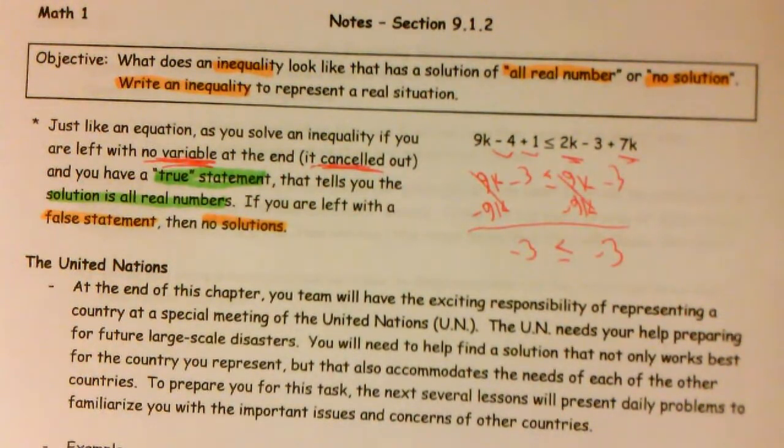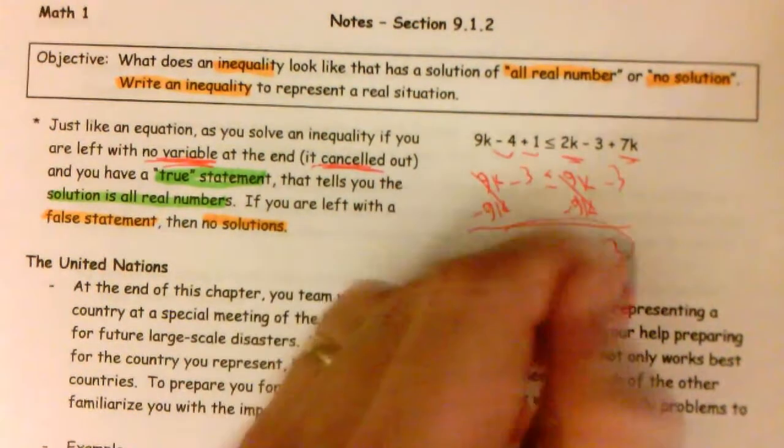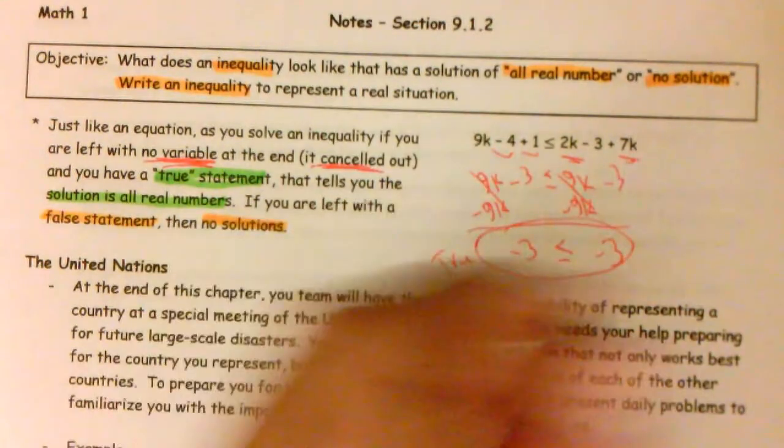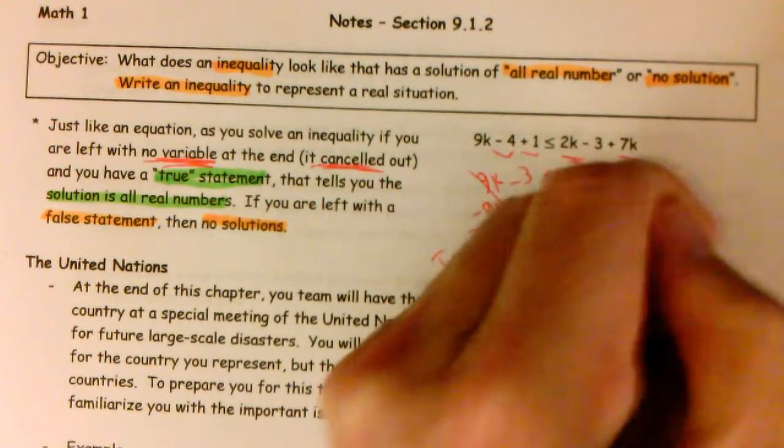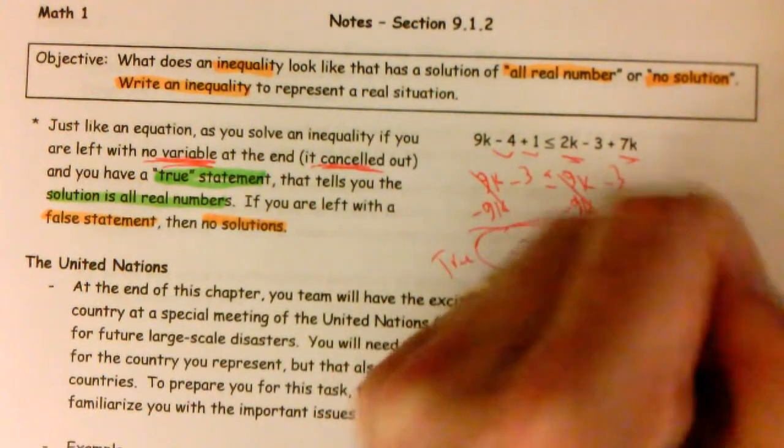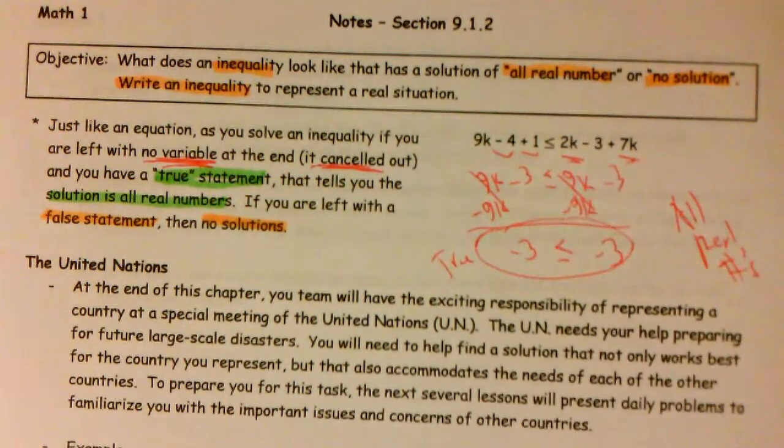Now if this had just been negative 3 is less than negative 3, it would be false. But since it is less than or equal to, they are equal to each other. So this is a true statement, which means the answer is all real numbers to this inequality.